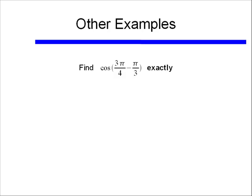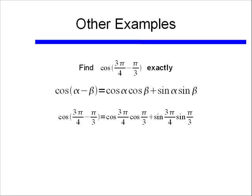Again, when we see the word exactly, that means don't touch your calculator — you need to use your trig identities. If what we're trying to find is in the form of alpha minus beta, like we have here, then we'll use this difference identity: cosine of alpha minus beta is equal to cosine alpha cosine beta, plus sine alpha sine beta. In this case, alpha is equal to 3 pi over 4, and beta is equal to pi over 3. We're going to need to refer to our unit circle to remember what cosine of 3 pi over 4, cosine of pi over 3, sine of 3 pi over 4, and sine of pi over 3 are.